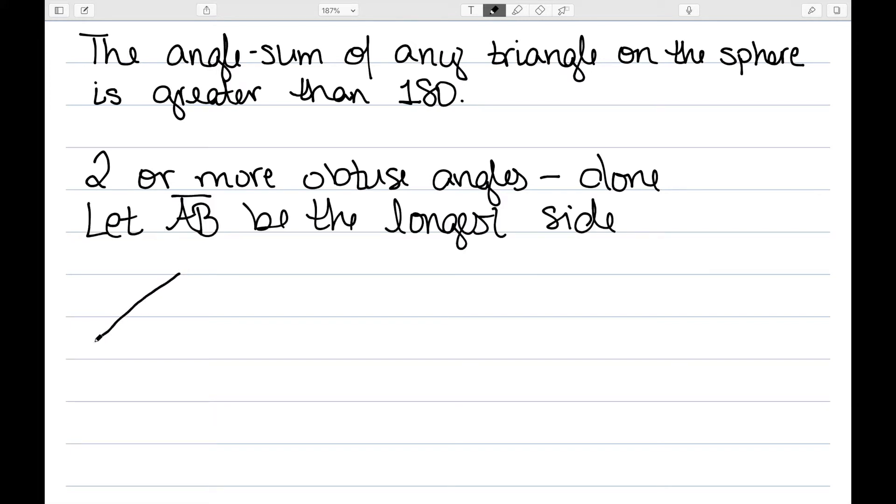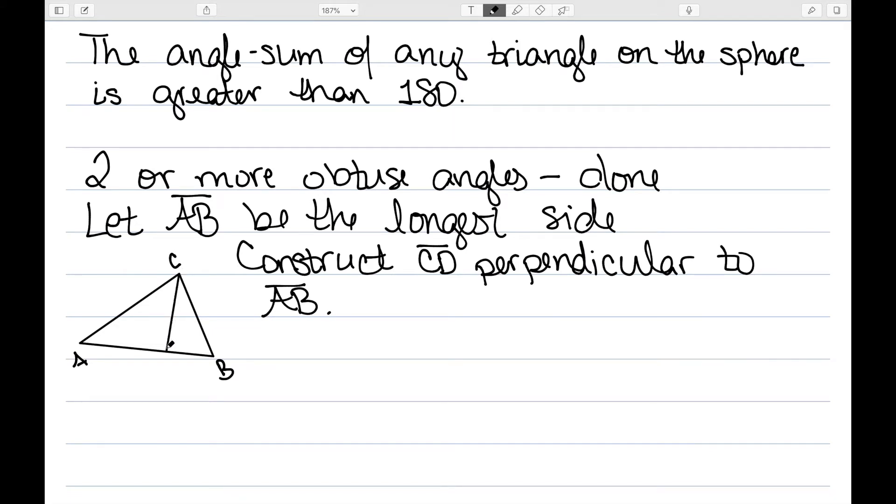I'm going to let side AB be the longest. So just label your vertices so that side AB is the longest side. In this case, we'll make it this bottom side here. So this will be A, B, and here's C. We then want to construct a segment CD, such that it's perpendicular to AB. So I want to draw the perpendicular line from C to AB. And then that intersection point will be D. I'm then going to go ahead and label these angles. I have one, two, three, and four.